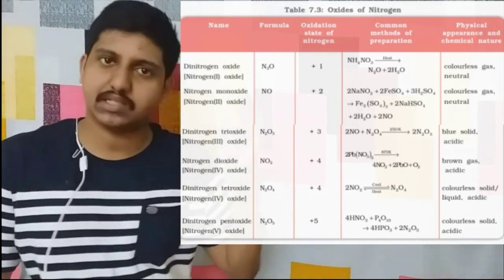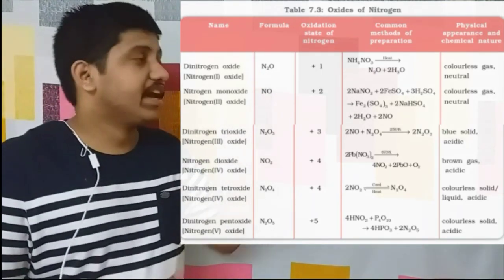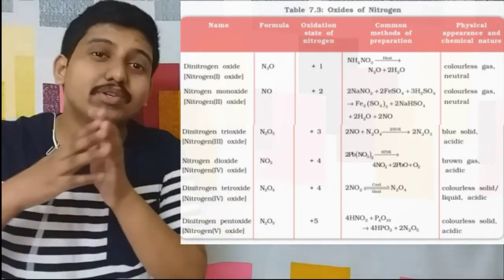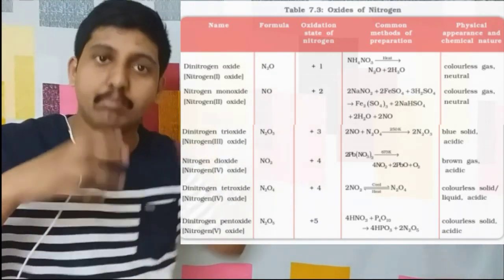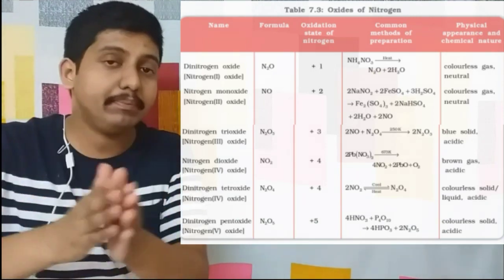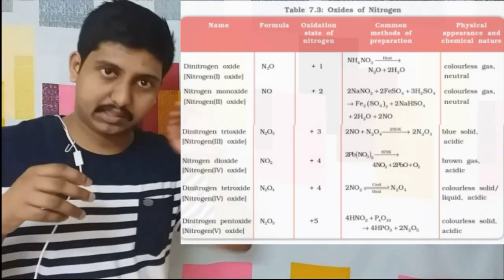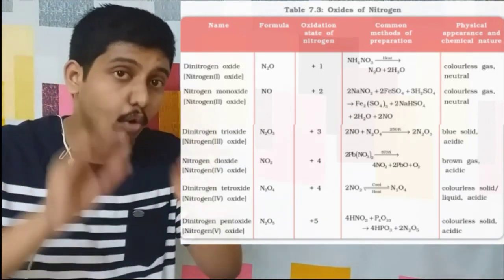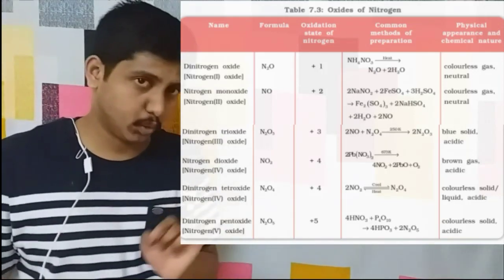How is N2O produced? That is nothing but by the thermal decomposition of ammonium nitrite. Ammonium nitrite when heated gives our N2O. So if you are asked which gas is evolved in the thermal decomposition of ammonium nitrite, it is N2O. Remember that point very clearly.